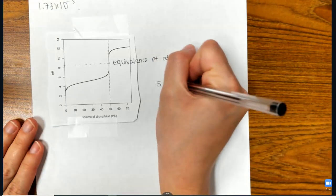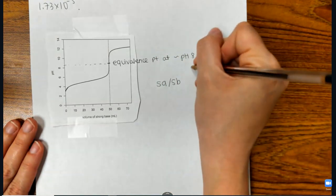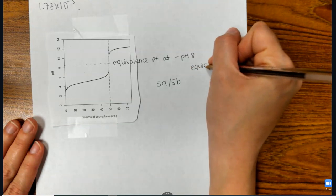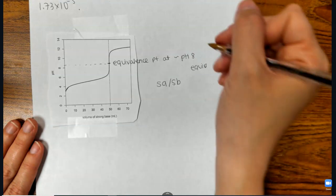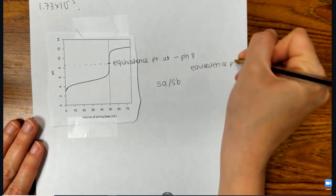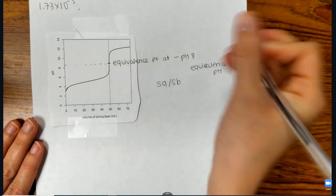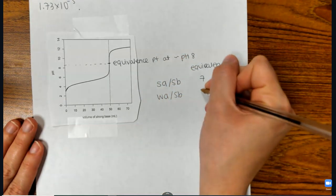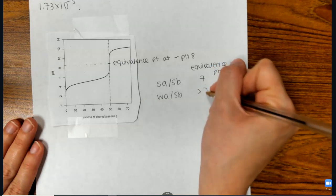So a strong acid-strong base titration, the equivalence pH will be 7. Hold on, I just lost my mind. Equivalence point, sorry. For a strong acid-strong base, is 7. If it's a weak acid-strong base, it's going to be greater than 7.